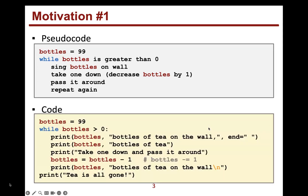Here is code we could use for this. We're creating a variable called 'bottles'. Then while the number of bottles is greater than zero, we sing how many bottles we have on the wall, sing it again without 'on the wall', say 'take one down, pass it around', and then decrease the number of bottles using 'bottles = bottles - 1'. Then we print the new number of bottles on the wall, and it repeats, changing as the number decreases until the tea is all gone.